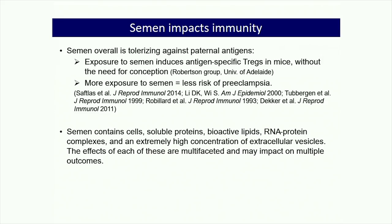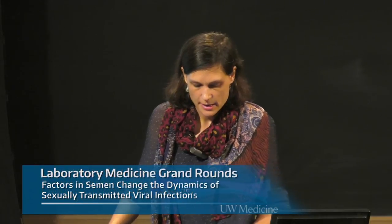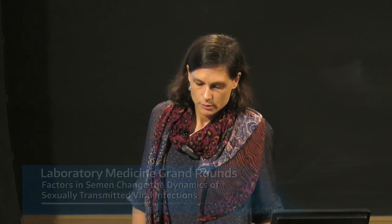Semen is a complex fluid containing a cellular fraction including sperm, germ cells, and leukocytes—whose concentration varies by individual and health status. There is a soluble protein fraction with cytokines, chemokines, and other bioactive proteins; bioactive lipids like prostaglandins at very high concentrations; RNA-protein complexes; and an extremely high concentration of extracellular vesicles, which themselves contain all these cargo types. These fractions have multifaceted effects, likely targeting different cell types in the recipient mucosa, and we study them separately to understand mechanisms before building a holistic picture.